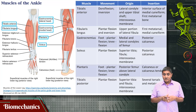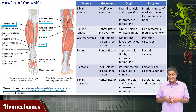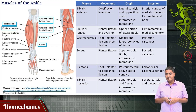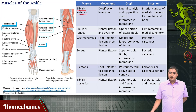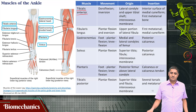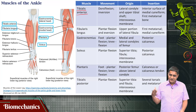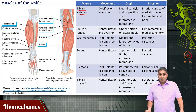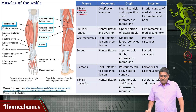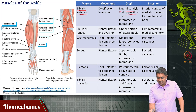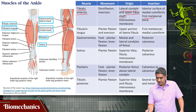An important muscle found on the front side of the lower leg is tibialis anterior. Anterior means front side — you know because the name itself says anterior. This muscle originates at the lateral condyle and upper tibial shaft, and inserts at the first metatarsal bone.